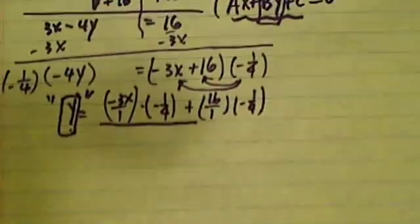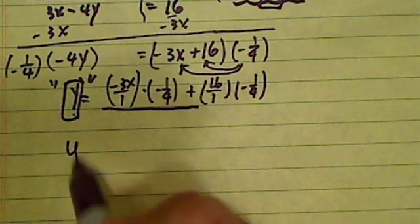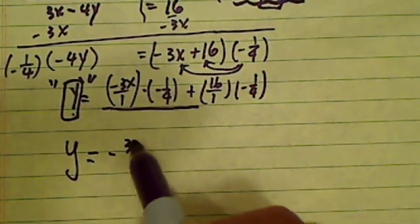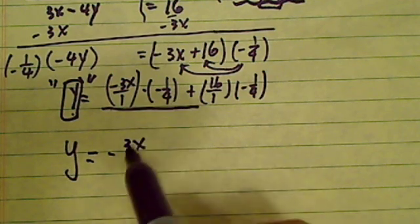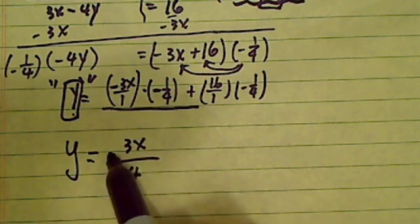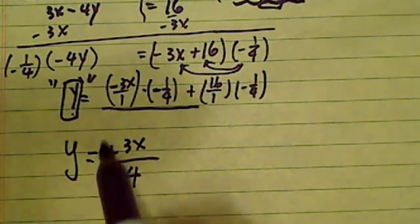One more step and then we're there. Y is all by itself. I have minus top times top. I have minus 3x. Bottom times bottom. I have a 4. Now since this is a minus here and minus here I have a positive. Two negatives make a positive.